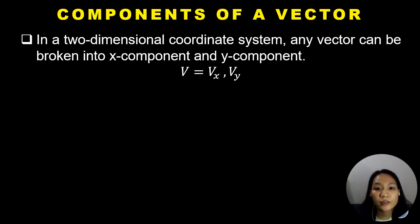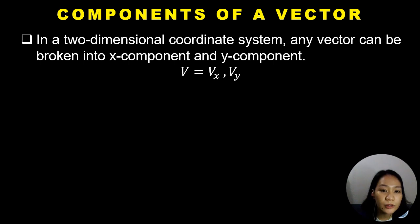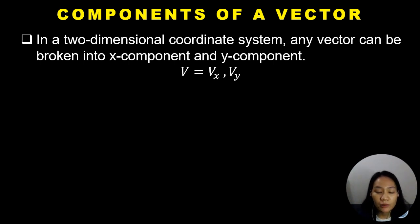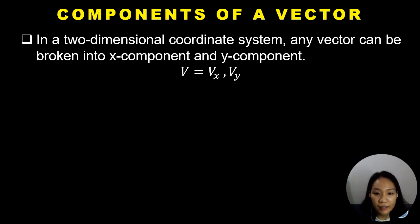What are components of a vector? Traditionally, in a two-dimensional coordinate system — that is, the x and y coordinate system — any vector can be broken down into x and y components. For example, we have a given vector b. That vector has a horizontal and a vertical component called d sub x and d sub y.